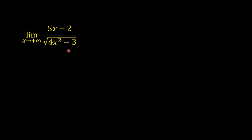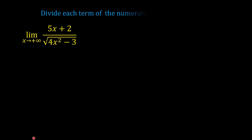To avoid this, divide the numerator and the denominator by the variable appearing in the denominator with the highest exponent. This variable is under a square root symbol. So, divide each term of the numerator and the denominator by the square root of x squared.